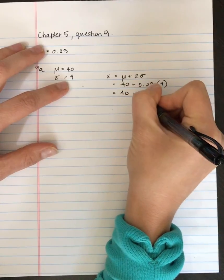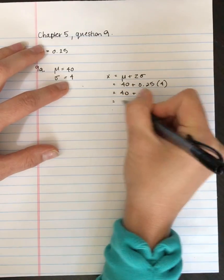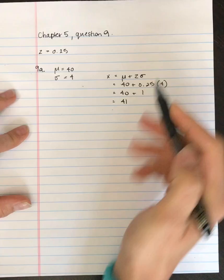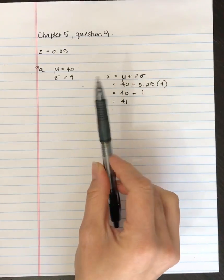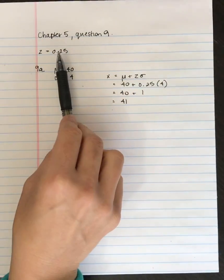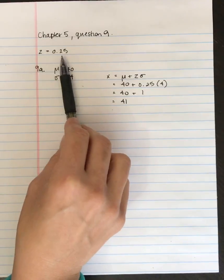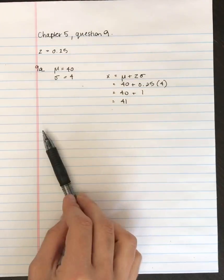So that's 40 plus 1. So the x-score is 41. The x-value that corresponds to a z-score of 0.25 in this distribution is equal to 41.